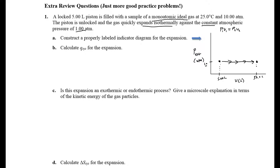A couple of really important things to remember: the area under this curve on the indicator diagram is equal to the work done by the system. That's an indicator diagram — highly recommend you do one. Most of the time it's the first thing you do in these problems, because the math flows directly from the diagram. If you get confused, do an indicator diagram; plus it's worth a lot of partial credit.